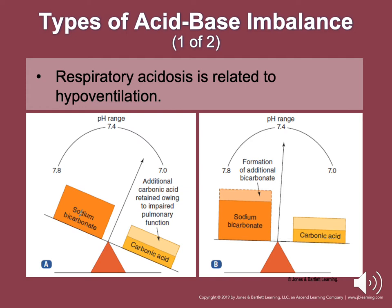Some signs of acidosis include systemic or cerebral vasodilation, headache, flushed skin, nausea and vomiting, and decreased respirations.